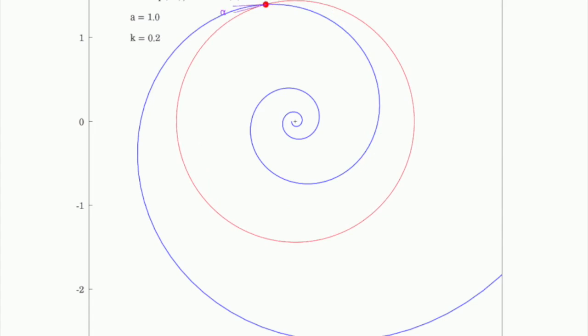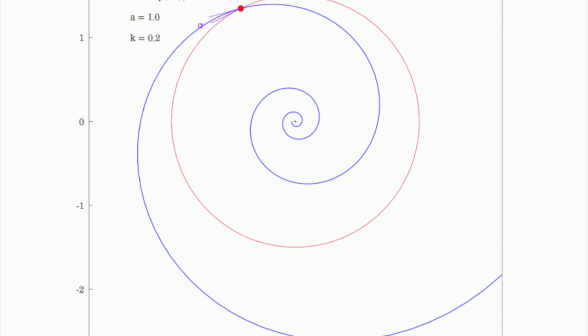The angle any tangent to the curve makes with the tangent to a circle at the same radius, known as the pitch angle, is constant, and results in a logarithmic spiral being self-similar. In other words, any part of it looks like any other part, though possibly rotated.